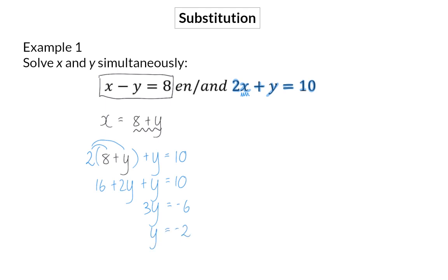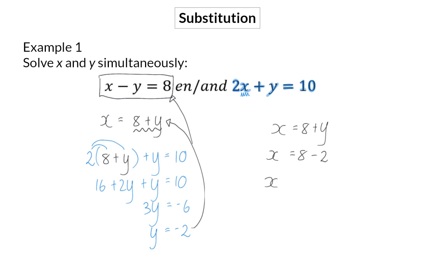Now that I have the value for y, I can substitute this back into the adjusted equation or into the original equation. I'm going to take the adjusted equation and substitute the y value with minus 2. This means that the x value is equal to 6.